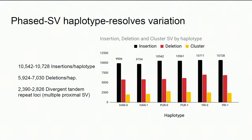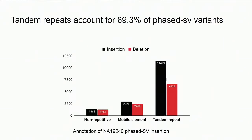Looking at variant classes across assembled haplotypes, we see about a two-to-one ratio of insertion to deletion structural variants per haplotype, and a large number of variant clusters in highly variable tandem repeat regions. Around 70% of variants found with the assembly-based approach are inside tandem repeats, and around another 15% are within mobile elements.